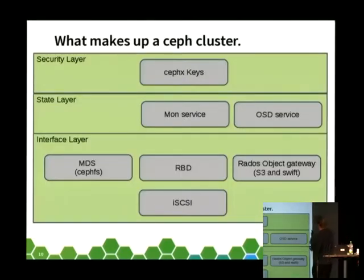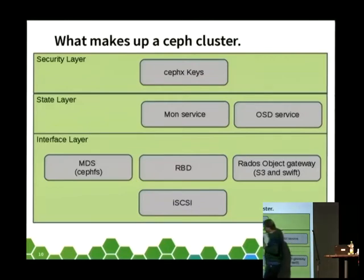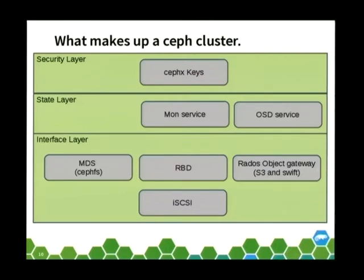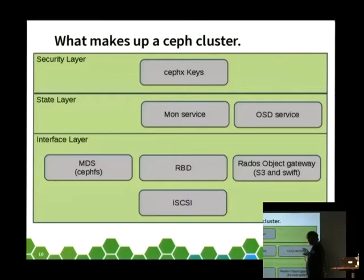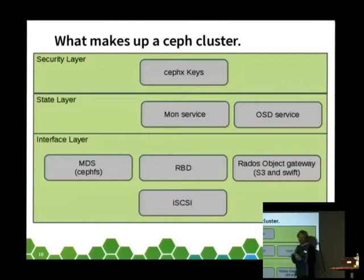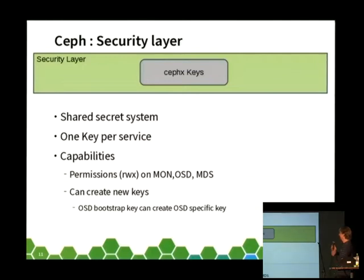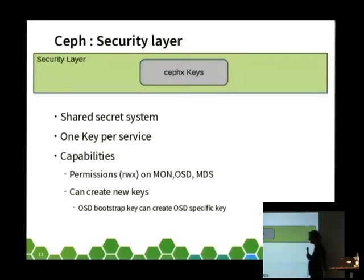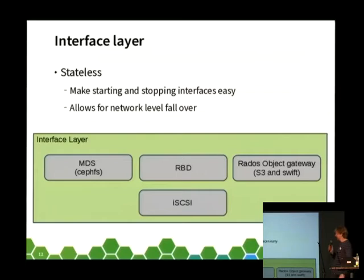Here we have a little picture of what makes up a Ceph cluster. I've put these things in a big box — this is the interface layer. Below this, in the abstraction layer, we have a series of services that provide state, and then we have a security layer which allows you to bind these parts together over a messaging system. The security layer is based on a shared secret system — we have one key per service and some capabilities on that security layer. All very boringly, reassuringly normal.